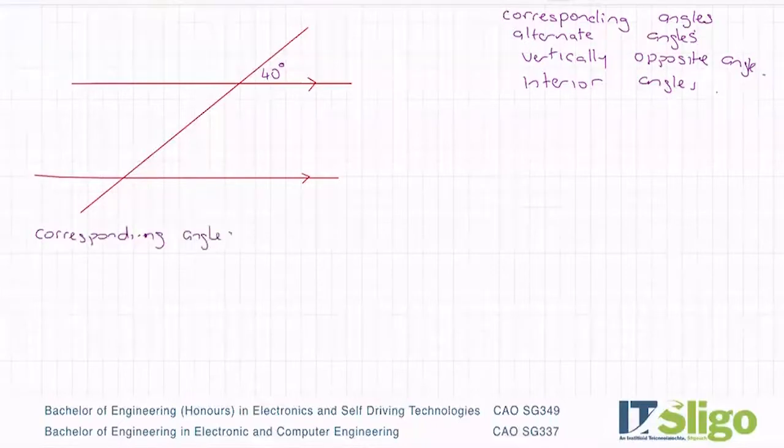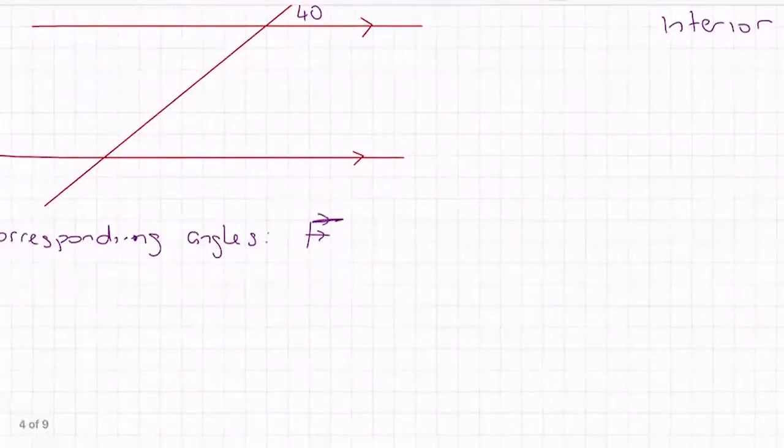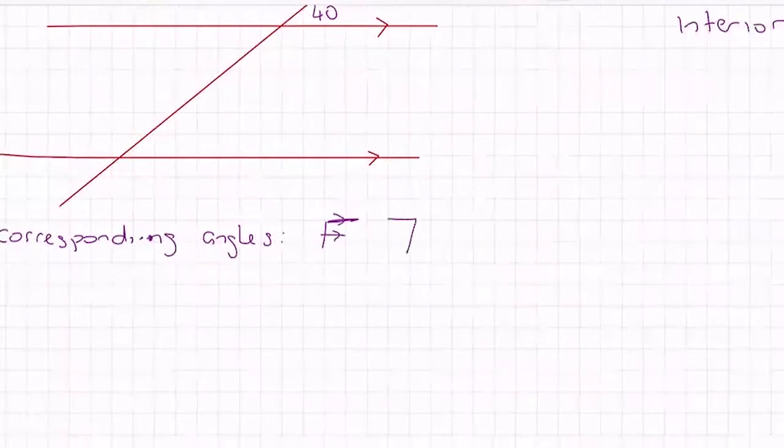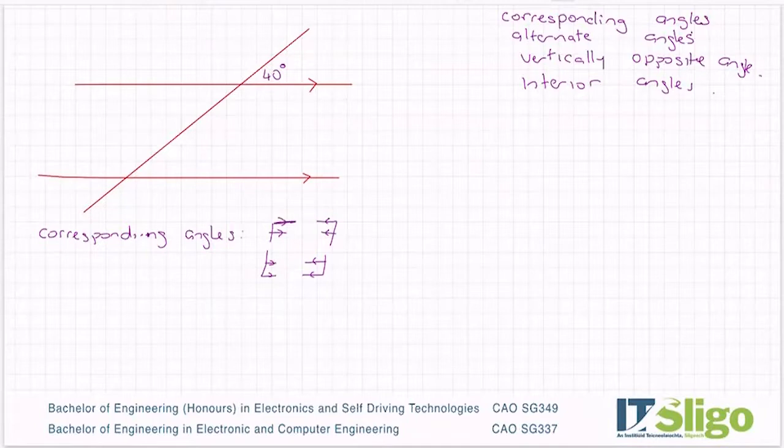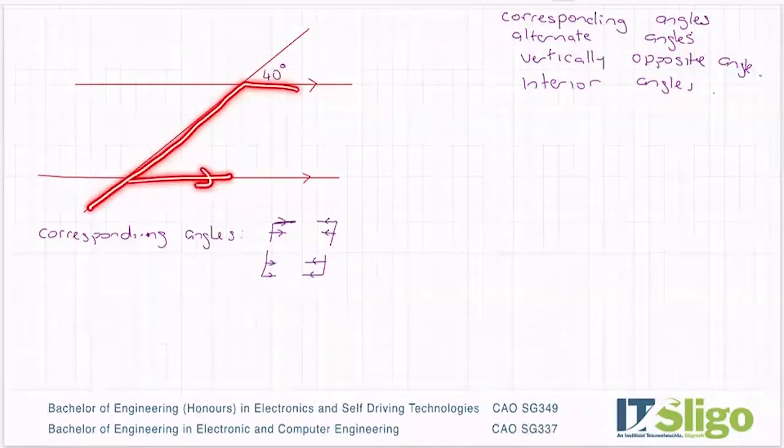And I always remember these from the letter F, where the arms of the F are my parallel lines. Can you see that? Now remember the F could be backwards, it could also be upside down. So there's a few different ways of F's. You're looking out for the letter F. For example, I have an F here. Do you see the arms of my F are the parallel lines?